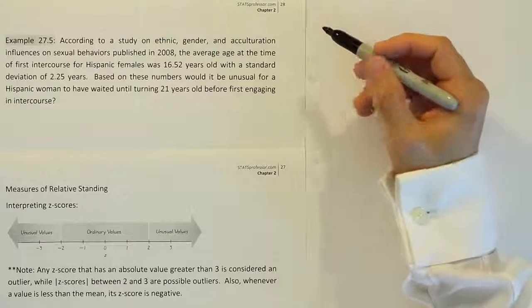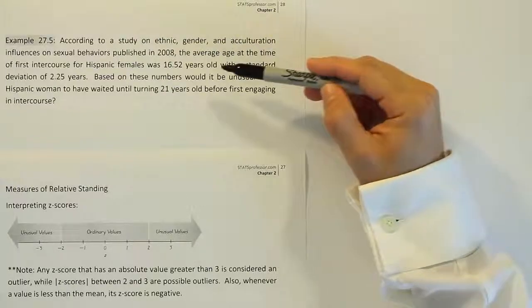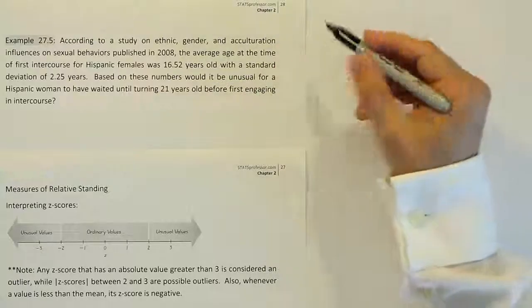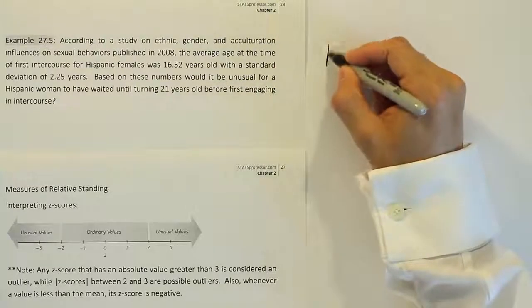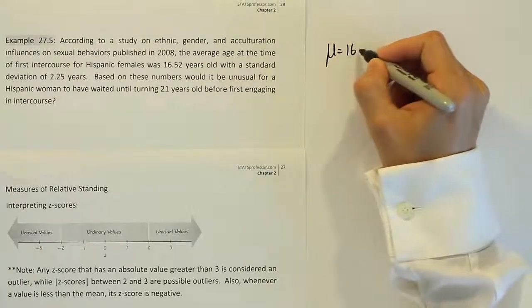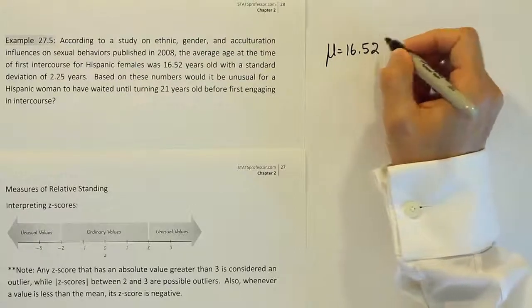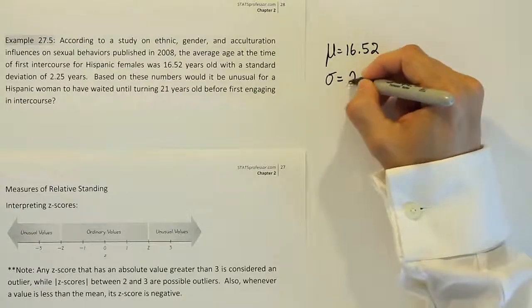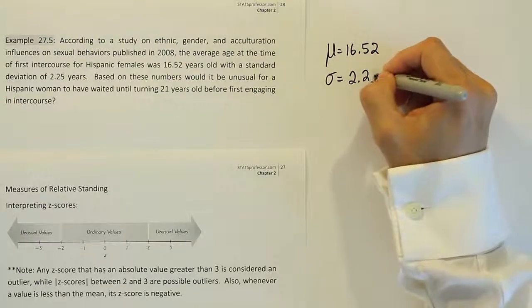Let's copy what the problem gives us in terms of numbers. It says that the average age at the time of first intercourse was 16.52 years. So the mean is 16.52.